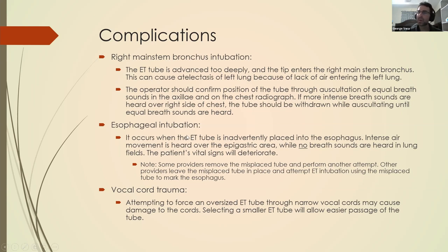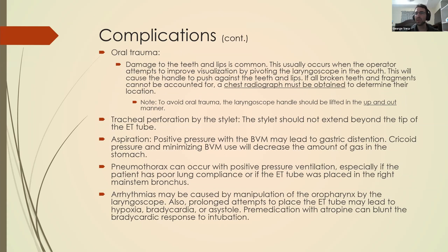Esophageal intubation is an important complication to be aware of. The esophagus is adjacent to the trachea, so if you didn't intubate the trachea you may have gotten it into the esophagus. The concern is that you'll be filling up the stomach with air — gastric insufflation — which can cause the patient to vomit. Always make sure the tube is placed in the right direction. Oral trauma is also a risk: you're using a laryngoscope with a metal blade, and if not manipulated correctly you can cause damage to the teeth, gums, soft palate, hard palate, and other areas within the oral cavity.